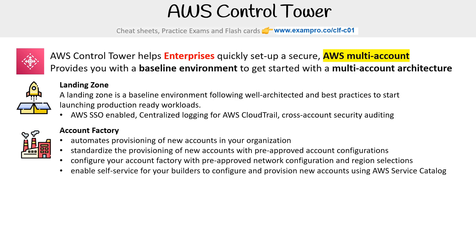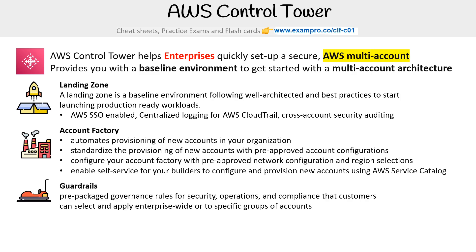The third and most important thing that AWS Control Tower comes with is guardrails. These are pre-packaged governance rules for security, operations, and compliance that customers can select and apply enterprise-wide or to specific groups of accounts.